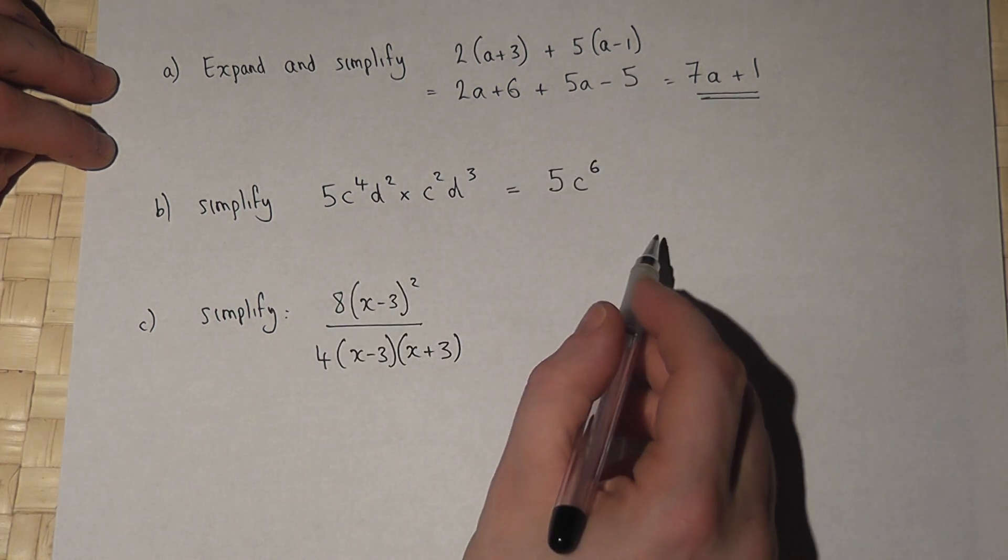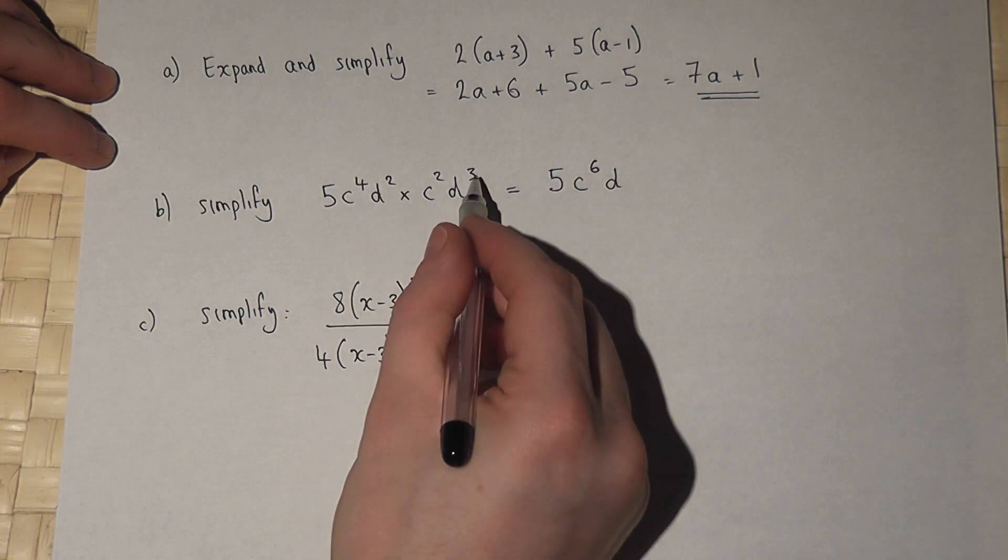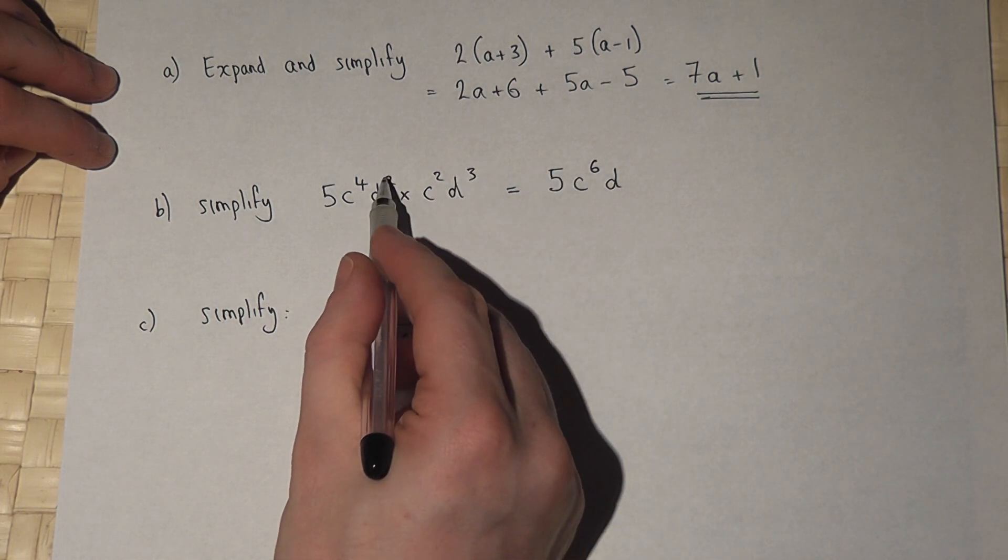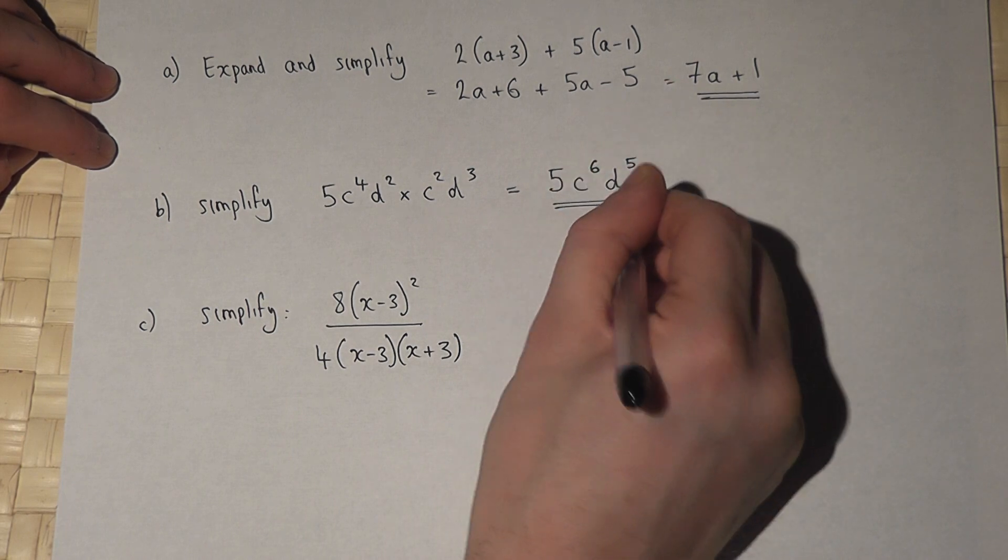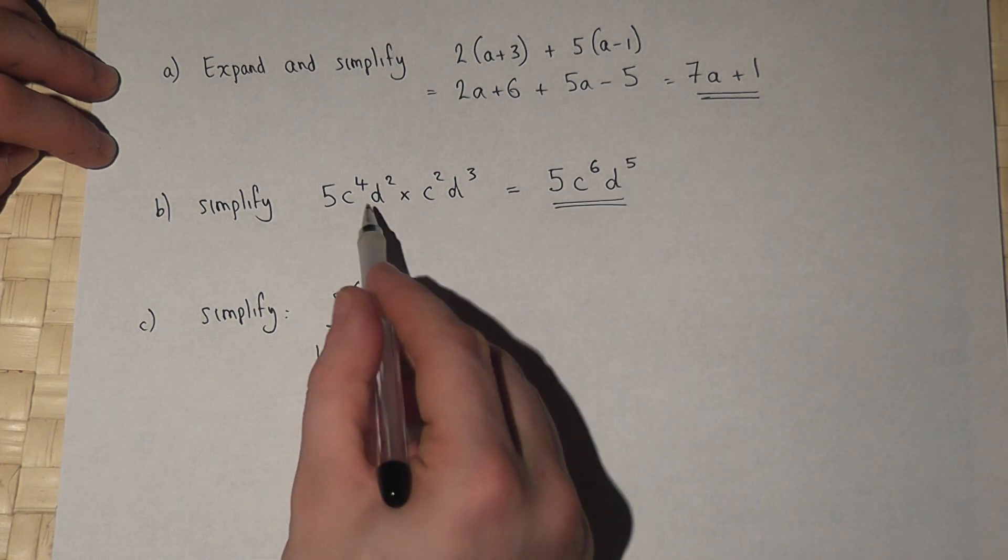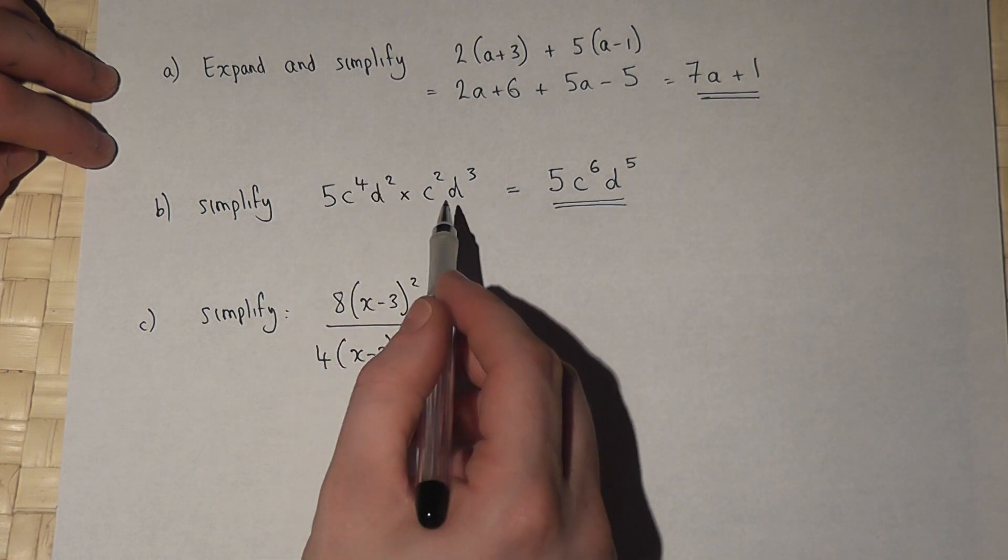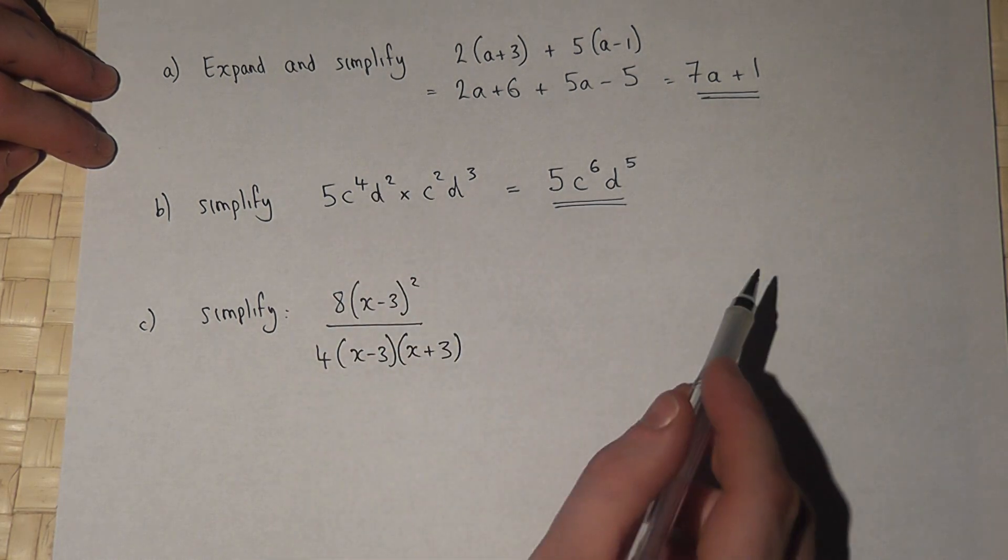And then for the d's, d squared times d cubed, we add the powers again, 2 plus 3 is 5. So the answer is 5c to the power of 6, d to the power of 5. The trick is to look at each letter individually. Because we're timesing, we add the powers.